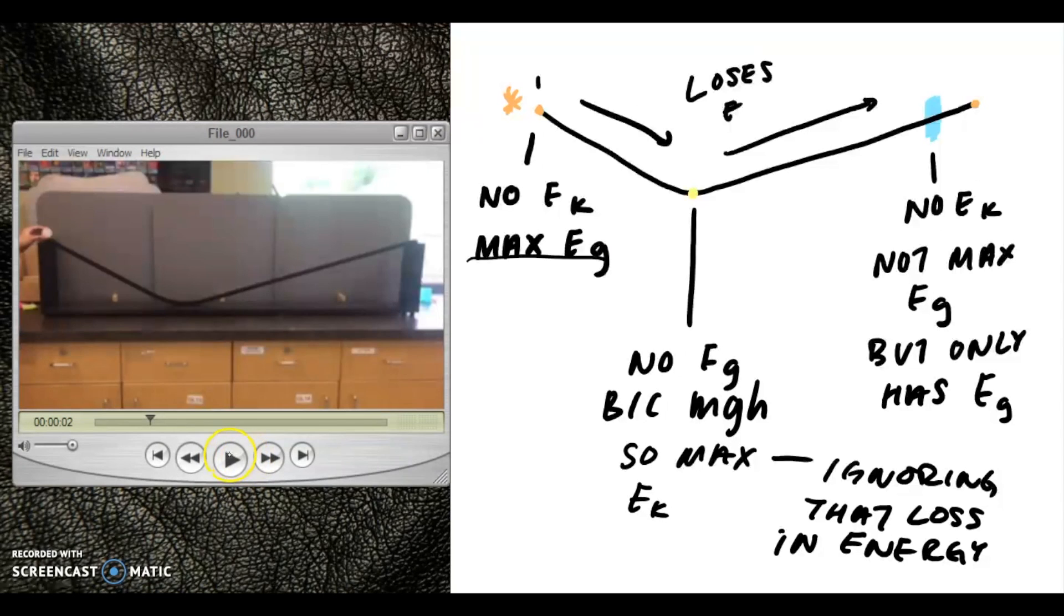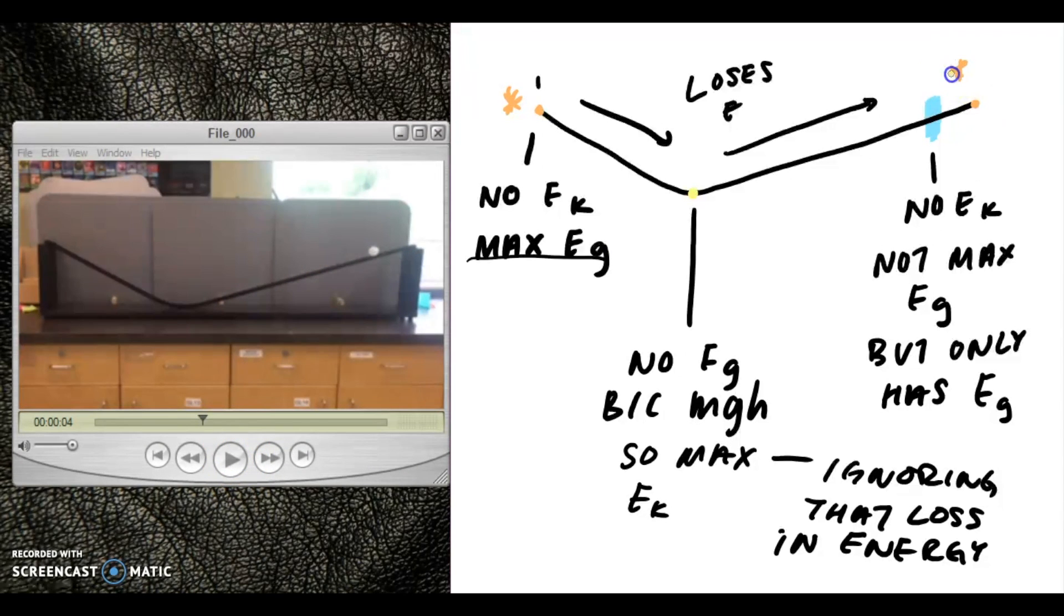Once it reaches to the other side, at this blue point here, it once again has no kinetic energy, but it does not have its max gravitational potential energy as it had at the very beginning because it does not go all the way to the very top here. But at this point, it only has gravitational potential energy.